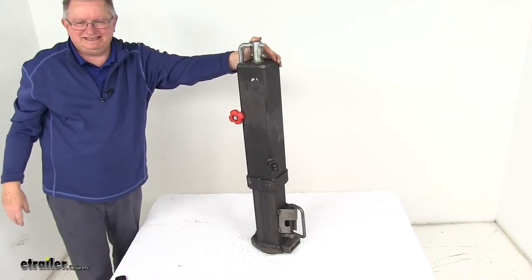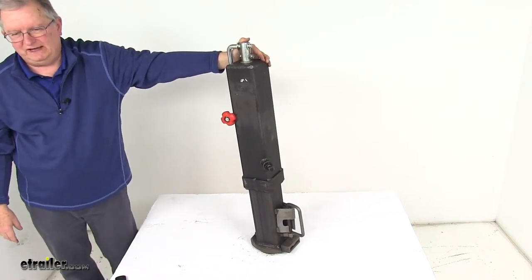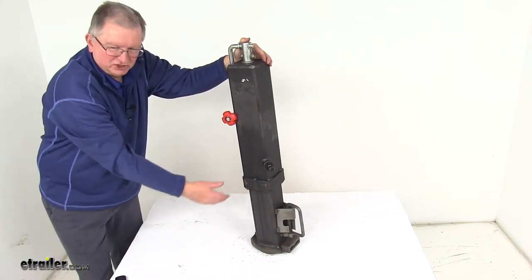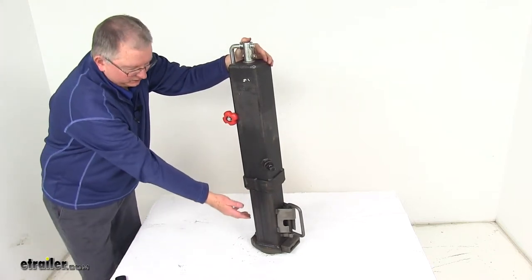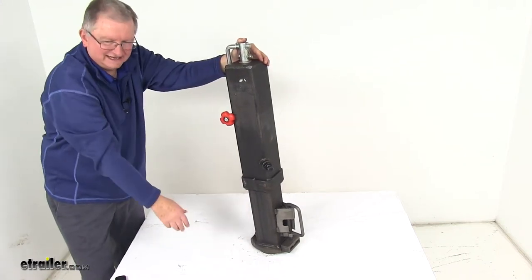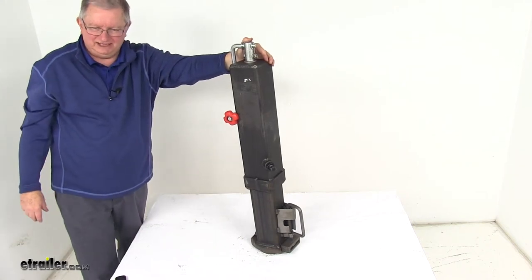The specs on this: it's designed to fit a 2-5/16 gooseneck ball. Range of vertical adjustment is 6 inches. When fully retracted, like it is now, from the bottom to the top is 32 inches. When you extend it out, that extra 6 inches will be 38 inches.